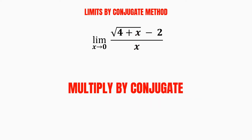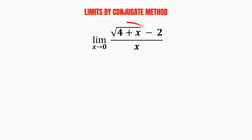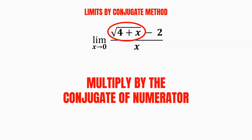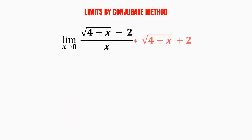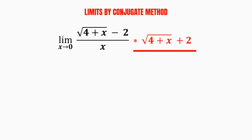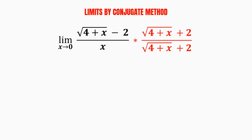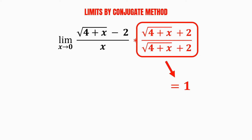To determine which conjugate to multiply with, we need to take a look at this fraction. Since we have a square root in the numerator, we multiply it by the conjugate of the numerator, which is the square root of 4 plus x, plus 2. But of course, we can't just multiply the expression by something directly, so we divide it by the same thing. This part simply represents 1, which does not affect our original expression.